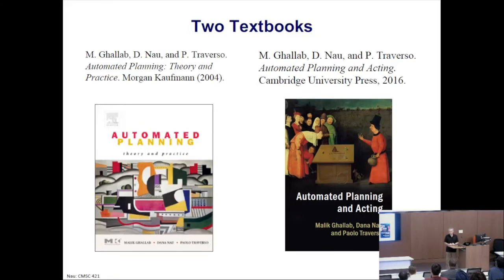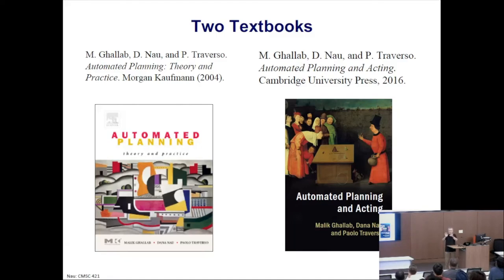I've written a couple of graduate-level textbooks. The first one, written back in 2004, was sort of the first comprehensive overview of the entire field of automated planning, and for that reason it became kind of the standard textbook on the topic. The more recent one is basically an attempt to give the entire AI planning community a push in a particular direction — namely, considering some of the complications that arise when you need to integrate planning and acting.